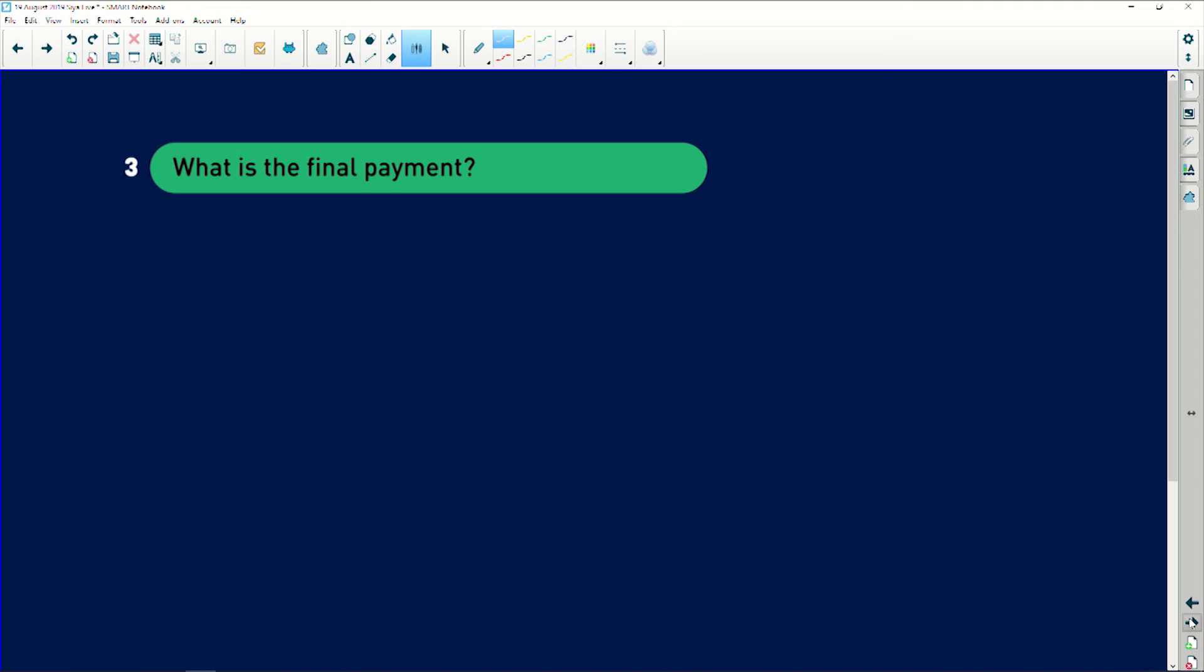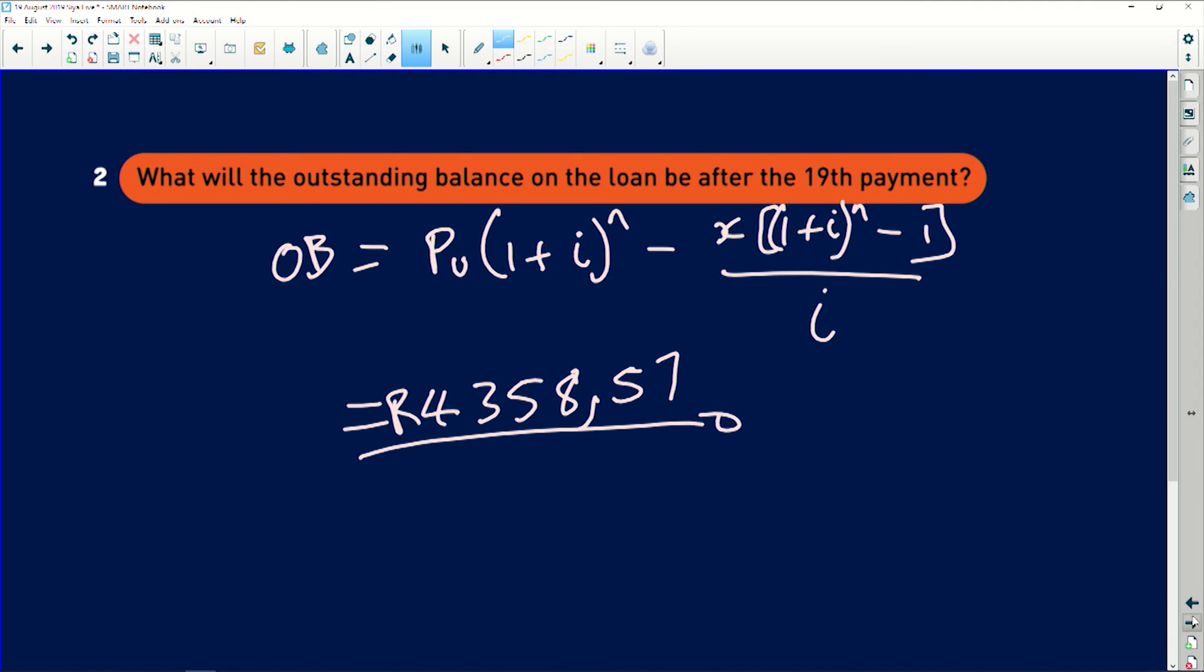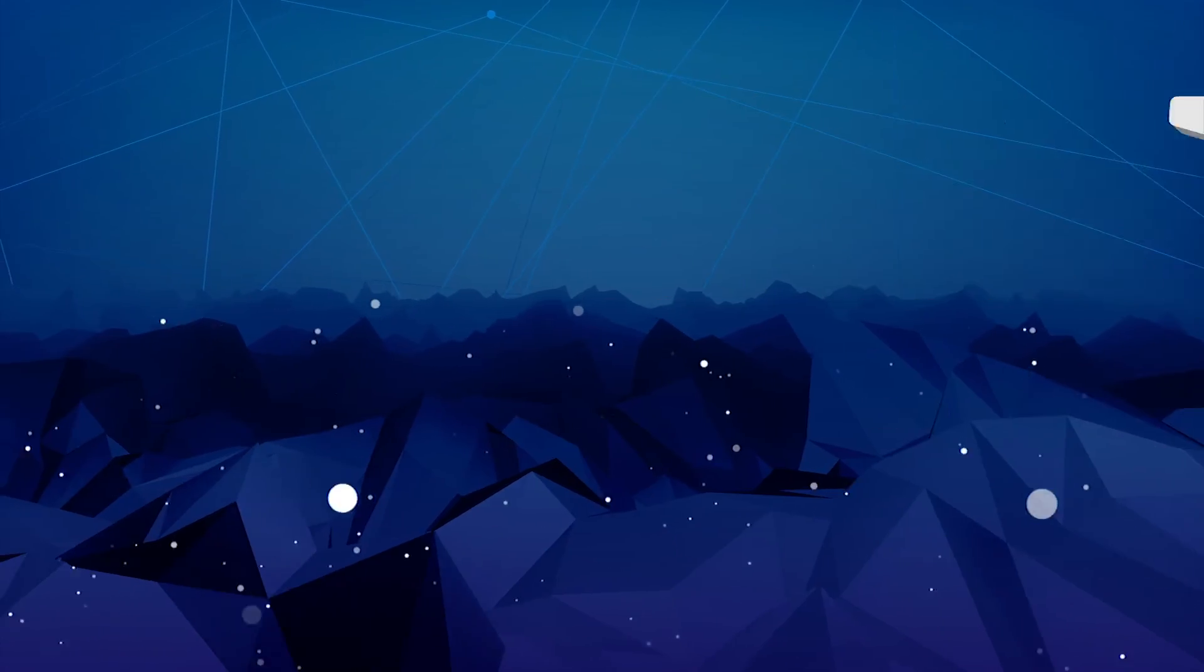Then the last question will just be what is the final payment. So the outstanding balance is there. So it means the outstanding payment will be this one. All right.